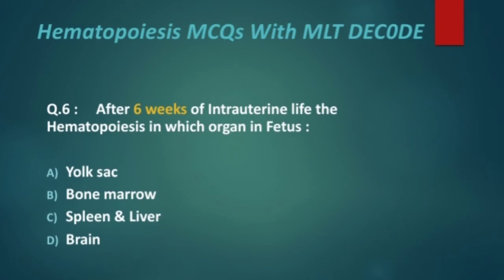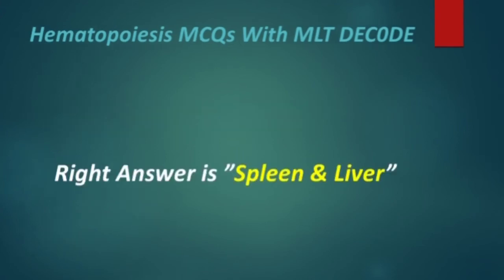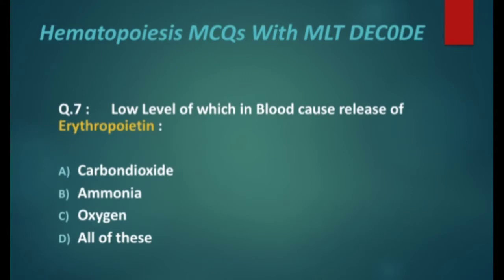Next MCQ: after six weeks of intrauterine life, hematopoiesis occurs in which organ in the fetus — yolk sac, bone marrow, spleen and liver, or brain? The right answer is spleen and liver.